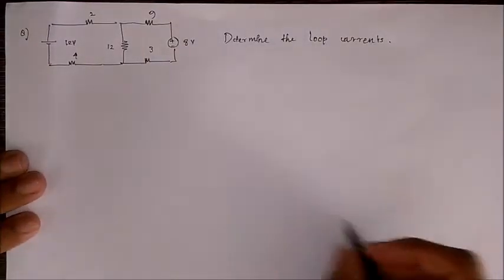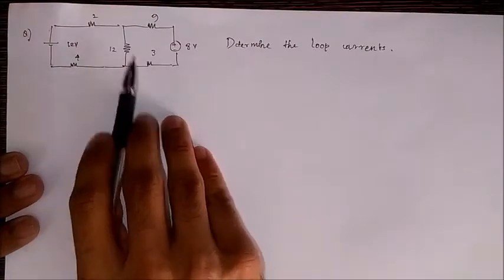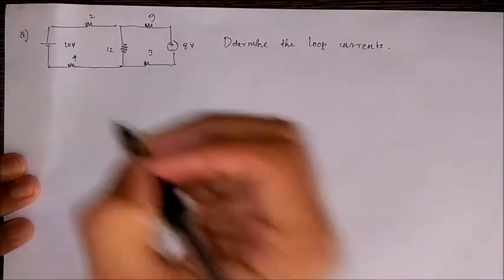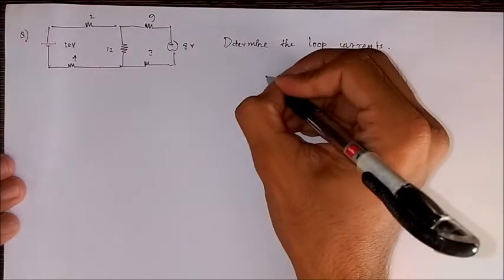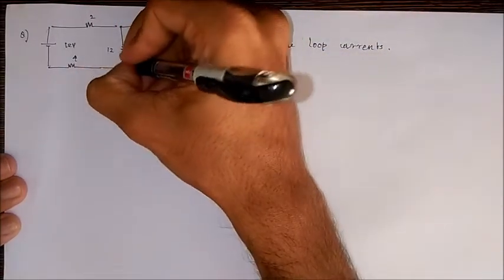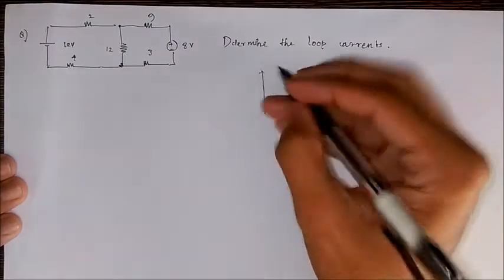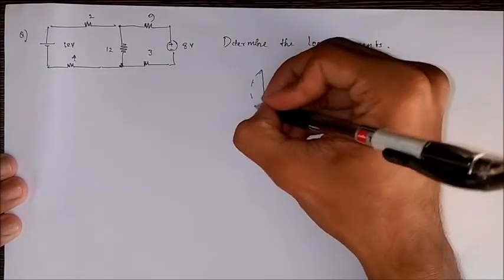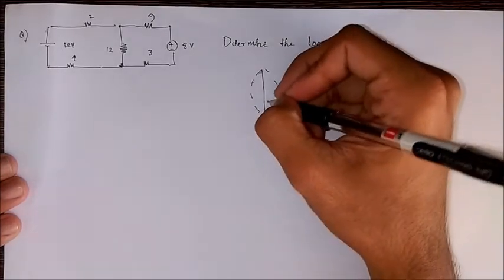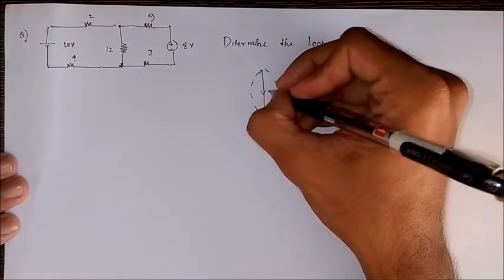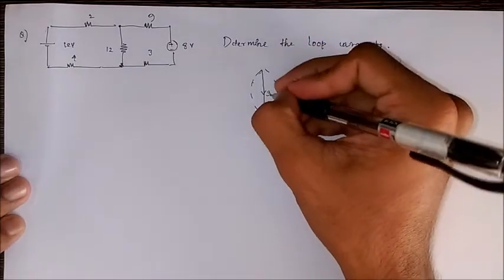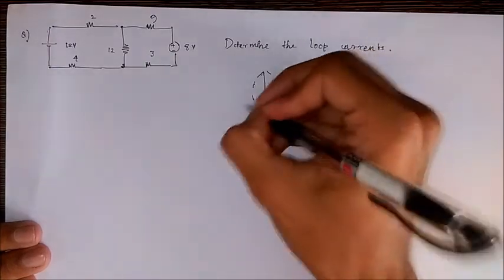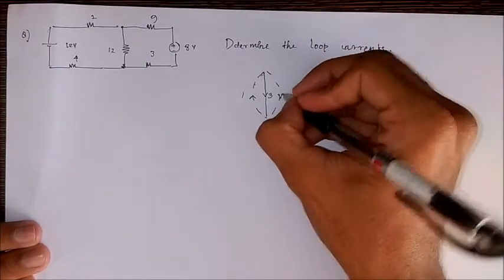First we have to write the tie set matrix. For the given circuit we will draw the tree which is the branch joining these two nodes and the links are marked with dotted lines. This is our tie set graph and the branch 3 I marked arbitrarily is our twig and the other two, that is 1 and 2, are links.